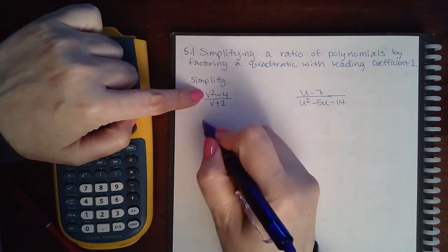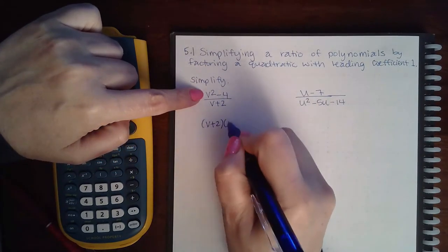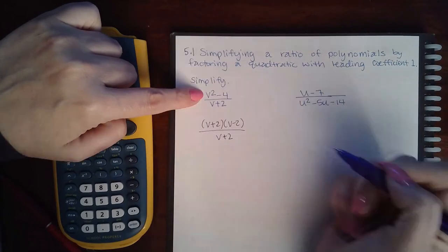this is the difference of squares. So I get v plus 2, v minus 2, and then v plus 2 in the denominator.